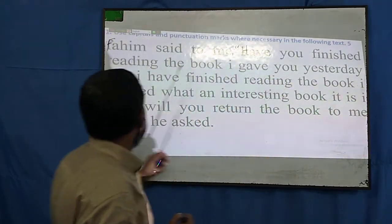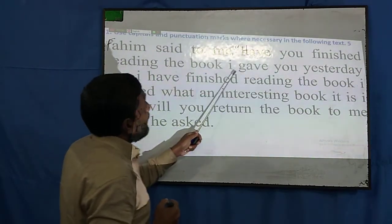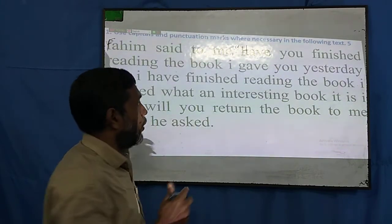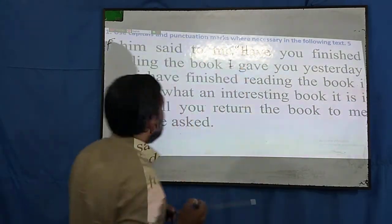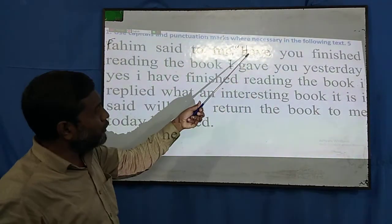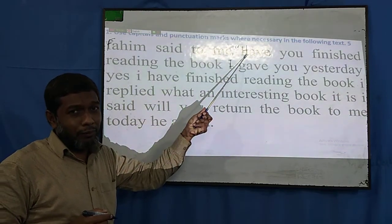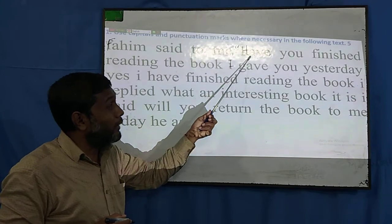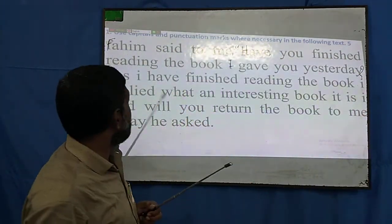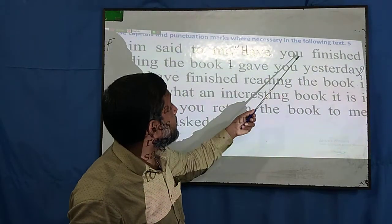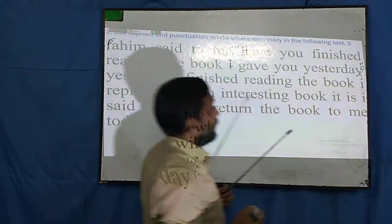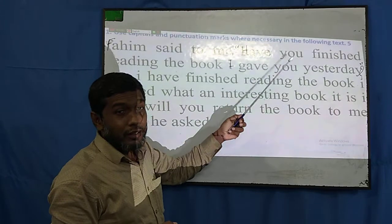So: 'Have you finished reading the book I gave you yesterday?' The sentence starts with an auxiliary verb, so we use an interrogation mark. As this speech has finished, we close with an inverted comma. The pronoun 'I' is always written in capital form. Then another speech starts, so we open with an inverted comma and the first letter must be capital.